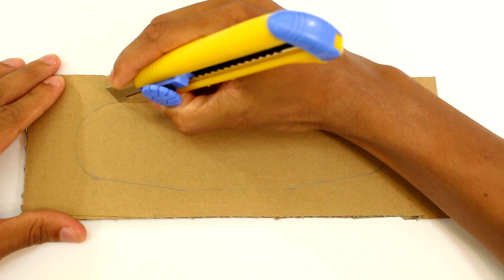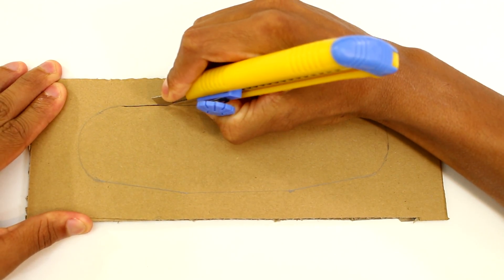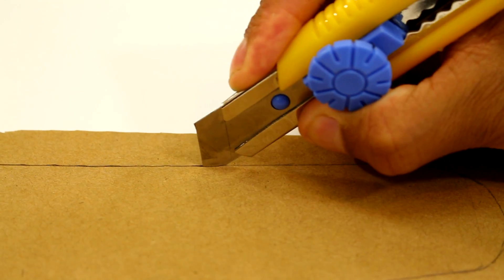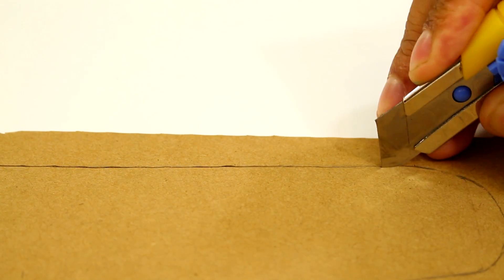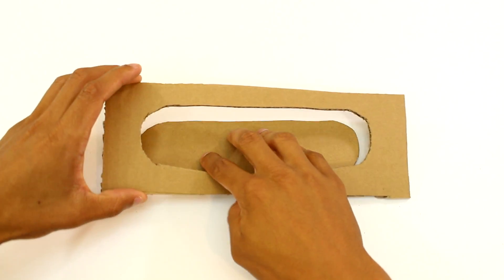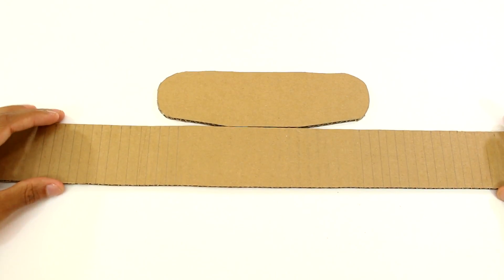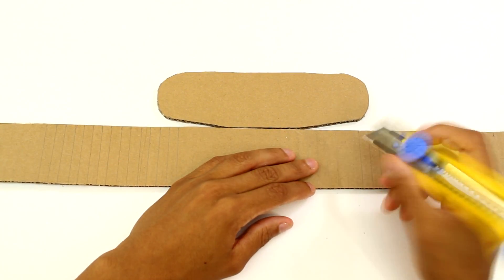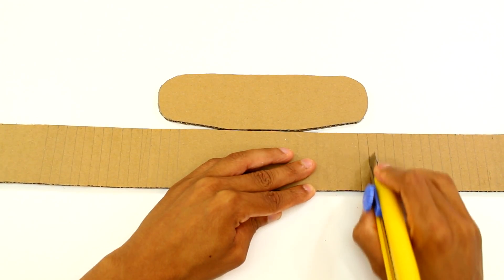Now we're going to cut out the cardboard frame for our speakers. Next we're going to need a long piece of cardboard that can wrap all the way around the face of our speaker.